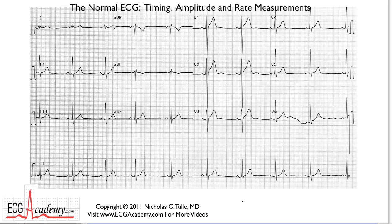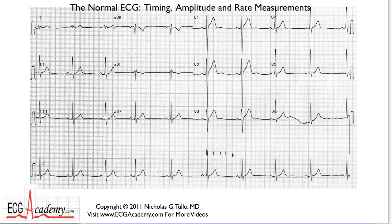We're going to go back to this 12-lead tracing of that 18-year-old person and get a sense of how to measure rate on a 12-lead. You have to scan around and look for a QRS complex that lands on a heavy line. Counting off: 300, 150, 100, 75, 60, 50 — so if this is 60 and this is 50, you'd call it about 55. And that's what we came up with in the mathematical calculation.